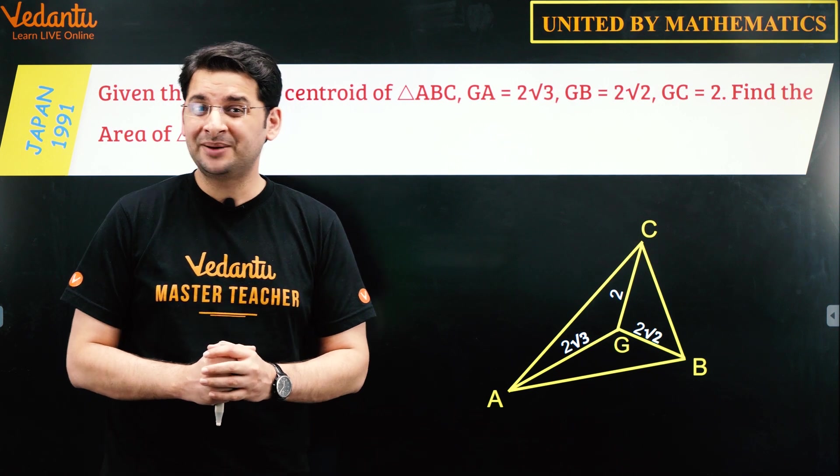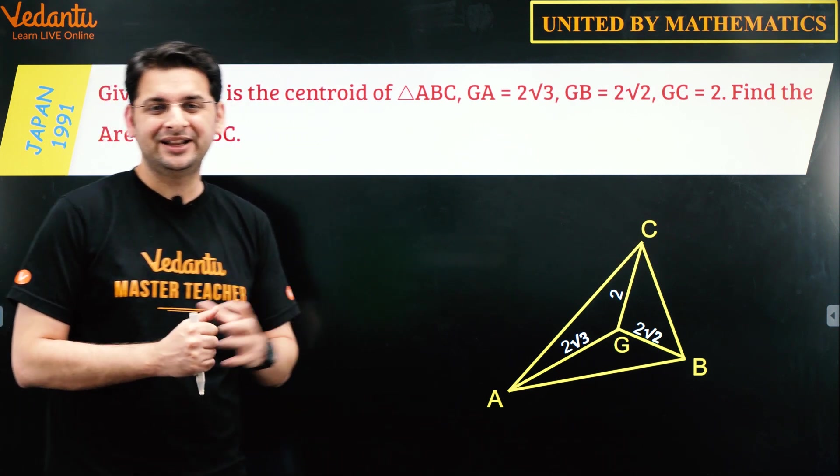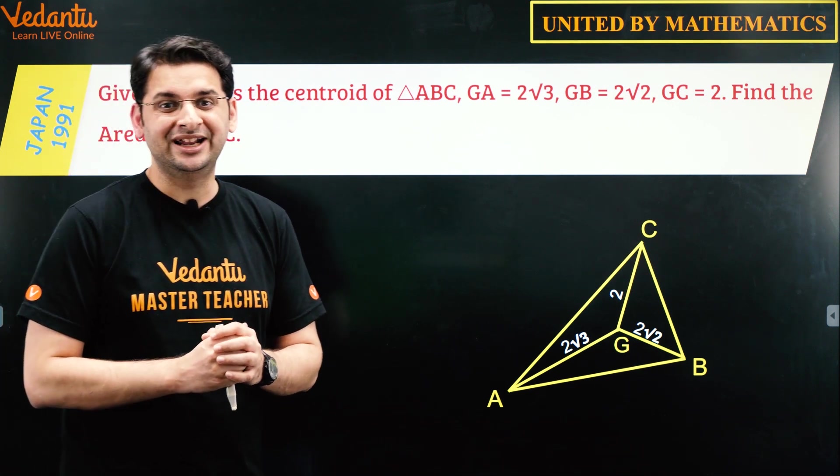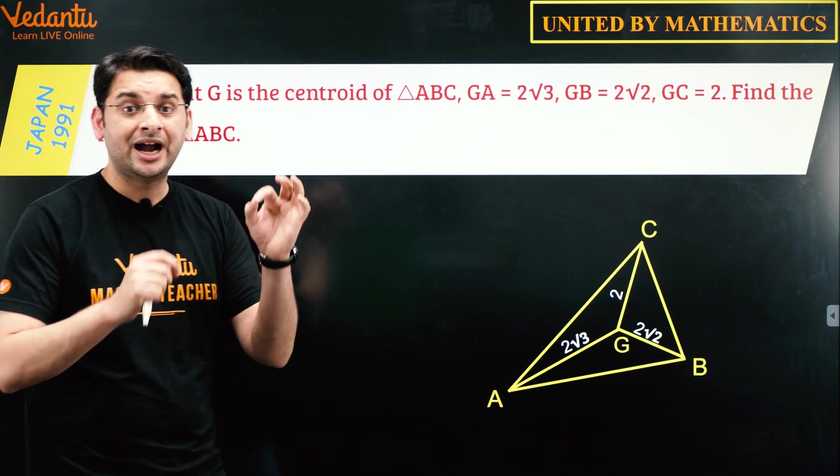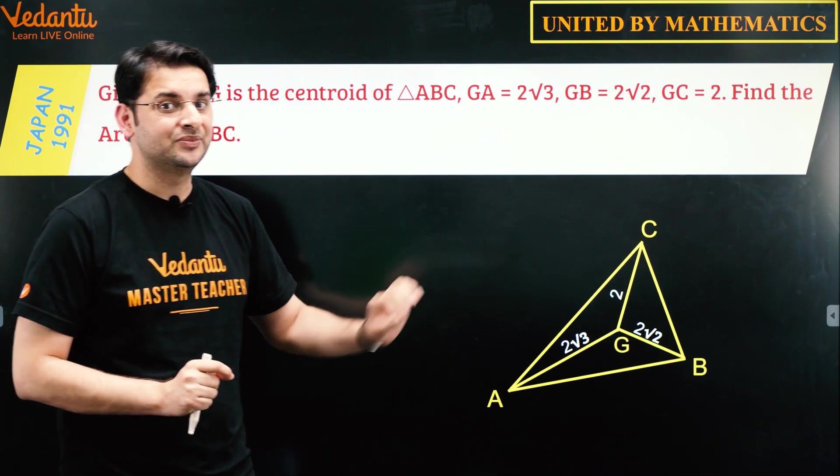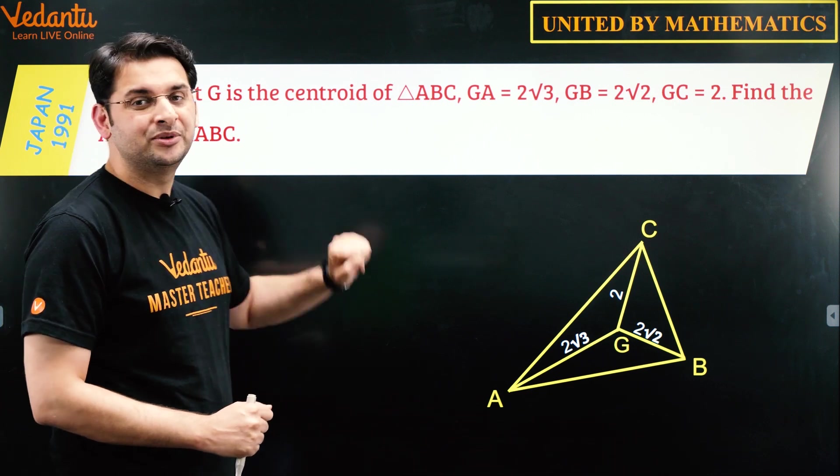So this one looks a bit complicated. It is not so. It may be a bit tricky. There are many methods to solve this question. We'll use one of the most elegant ones. Alright, so what is given to us? G is the centroid of the triangle and the distance of the centroid from all three vertices is given. We need to find the area of the triangle.